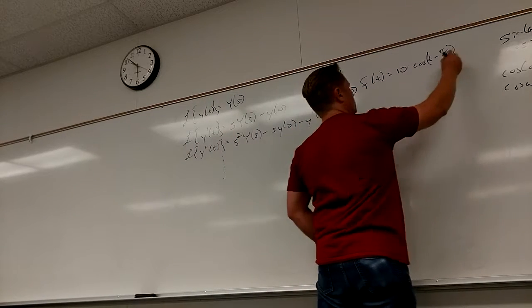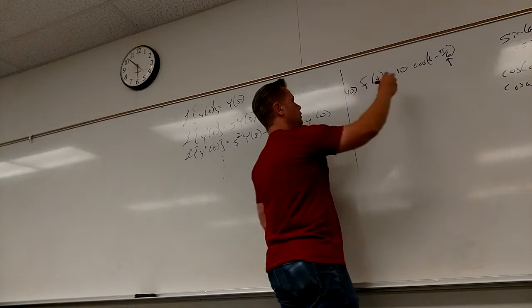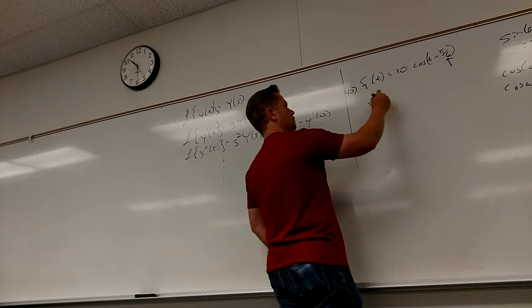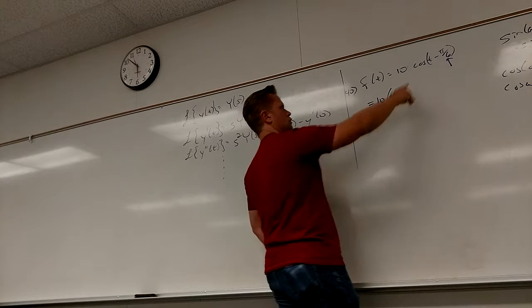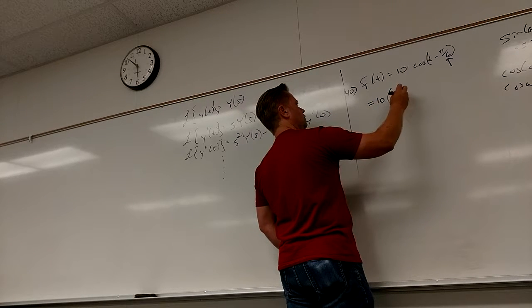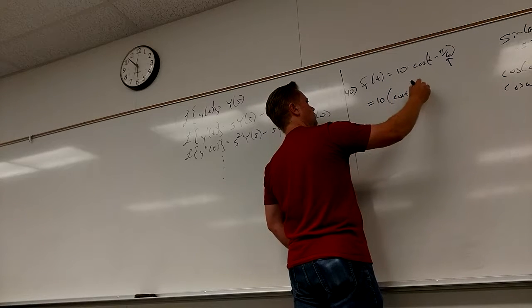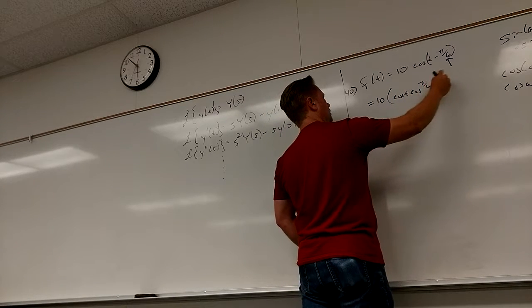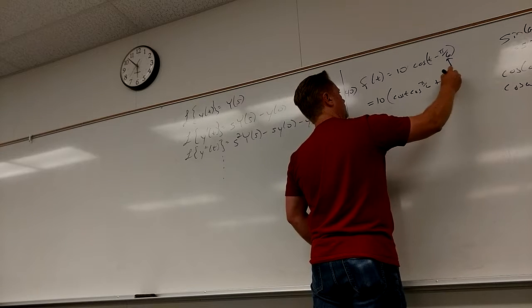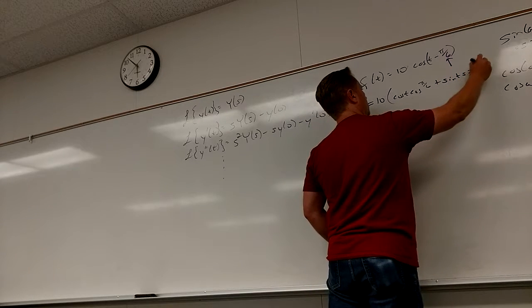So of course, I mean, this of course being a nice angle kind of tells me... So this would be cosine T, cosine T, cosine T, cosine π over 6, plus sine T, sine π over 6.